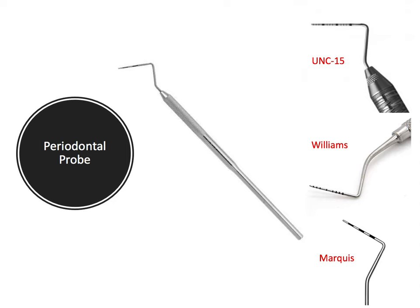The periodontal probe is used to routinely measure pocket depths and can also measure tooth width, overbite, and more. The UNC-15 probe measures up to 15 millimeters, with each mark representing 1 millimeter and larger hash marks at 4–5, 9–10, and 14–15 millimeters. The Williams probe has marks at 1, 2, 3, skips 4, goes to 5, skips 6, then 7, 8, 9, 10. The marquee probe shows 3-millimeter increments: 0–3 is the first silver part, then 3–6, 6–9, 9–12, etc.